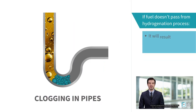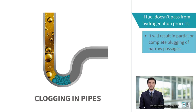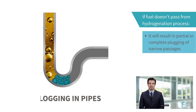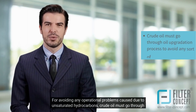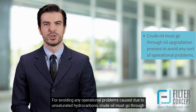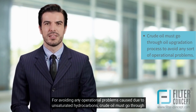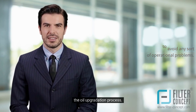If the fuel is not passed through the hydrogenation process, there can be partial or complete plugging of narrow passages within fuel injectors as a result of gum deposition or accumulation on flow surfaces, causing engine failures. To avoid any operational problems caused by unsaturated hydrocarbons, crude oil must go through the oil upgradation process.